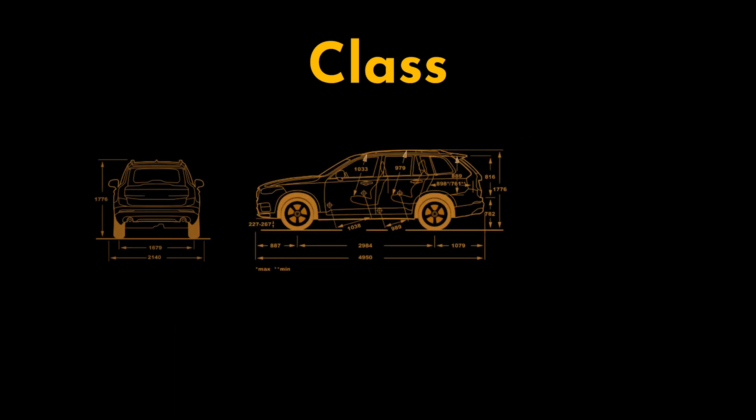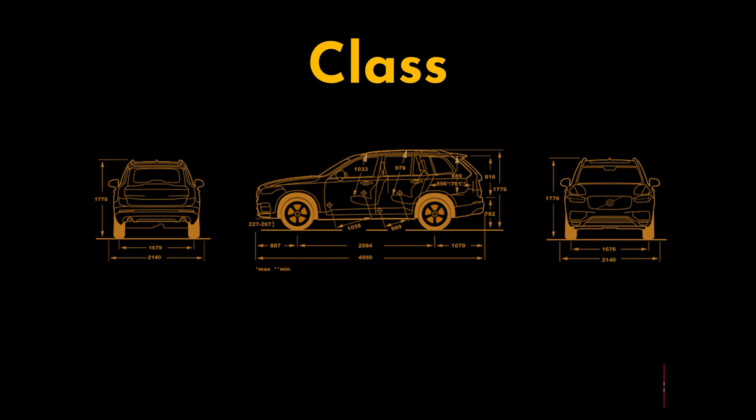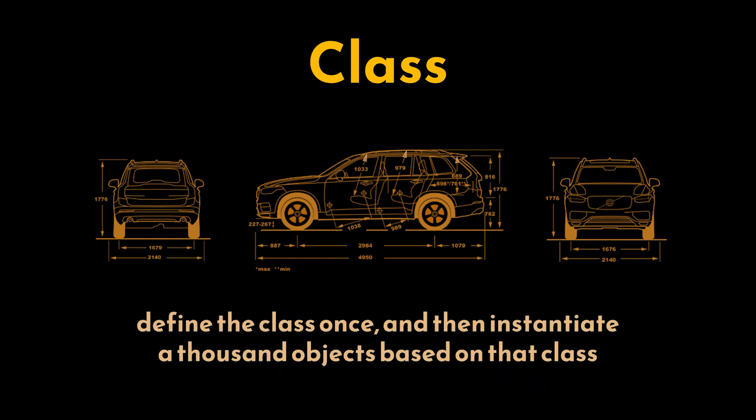If we want to build a car, before assembling the parts we draw a schema first, a blueprint describing everything about how that car will be built. But it isn't the car itself. We then use that blueprint to build one or a thousand cars. We define the class once and then instantiate a thousand objects based on that class.